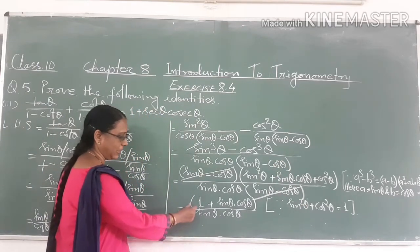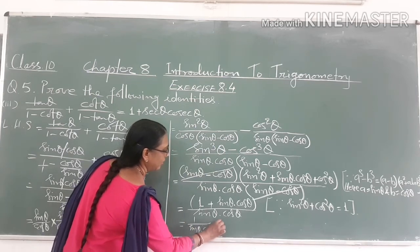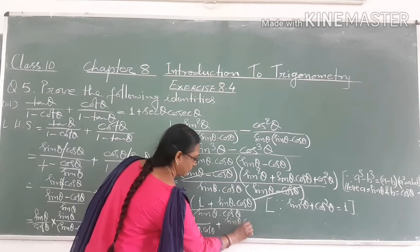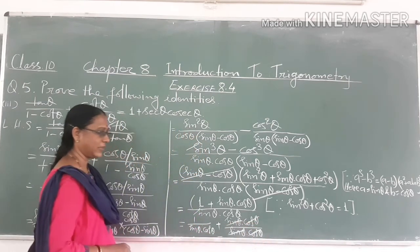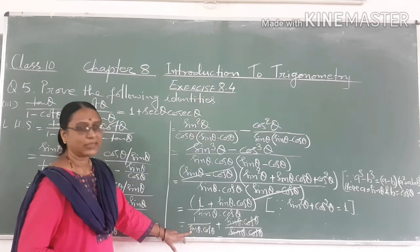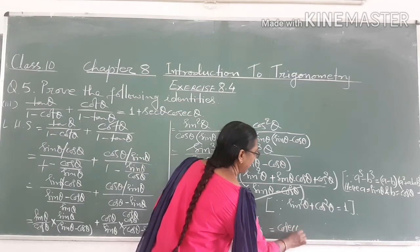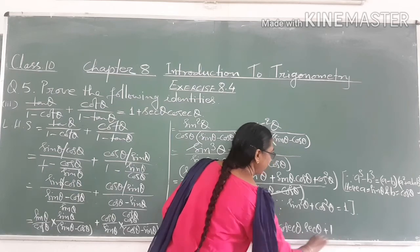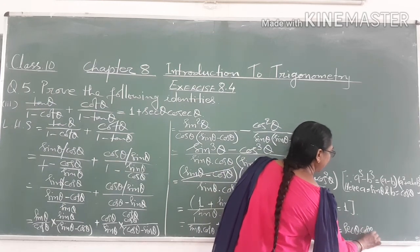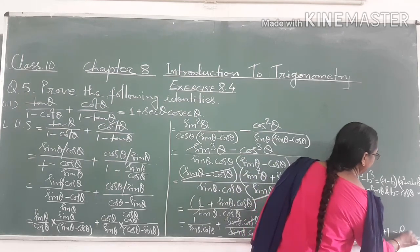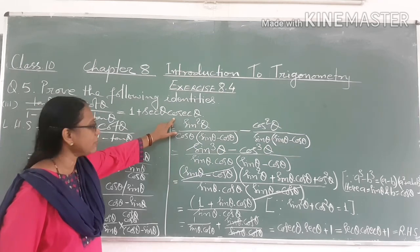Using sin² θ plus cos² θ equal to 1, we get 1 upon sin θ into cos θ, plus sin θ into cos θ upon sin θ into cos θ. Sin θ and cos θ cancel here. So 1 upon sin θ is cosec θ, and 1 upon cos θ is sec θ. Therefore we get sec θ into cosec θ plus 1.